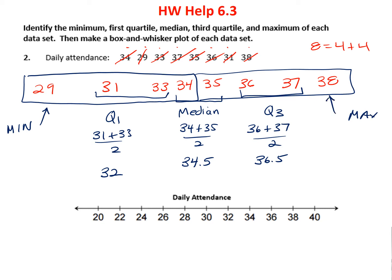So now we can come down and start making our box and whisker. Minimum is 29, right here on the number line. Maximum is 38, right here. My median is 34.5, about here. Quartile 1 is 32, and quartile 3 is 36.5. So there are my five points. Draw my box between quartile 1 and quartile 3. My median splits the box, and then I add my whiskers, and we're done.